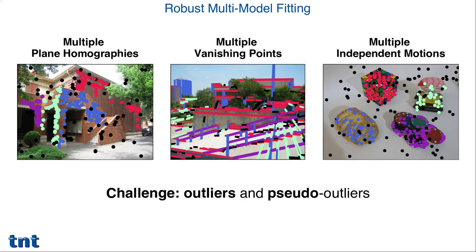In computer vision, we often interpret data by a set of parametric models, such as plane homographies, vanishing points, or independent object motions. In addition to gross outliers, these multiple models create pseudo-outliers, which pose a challenge for robust estimation of model parameters.